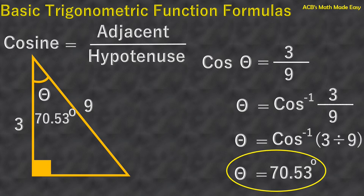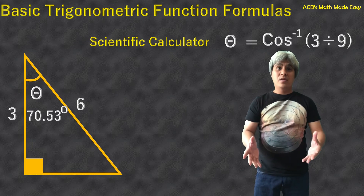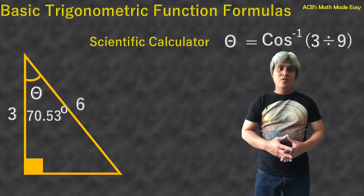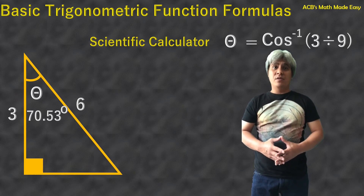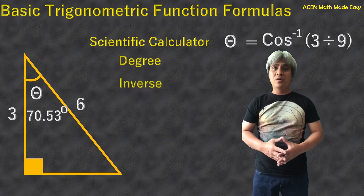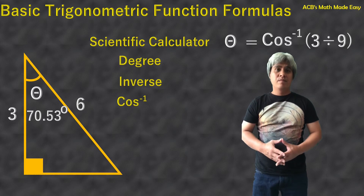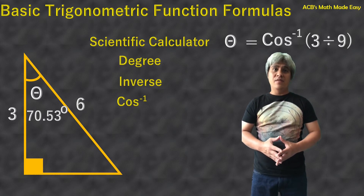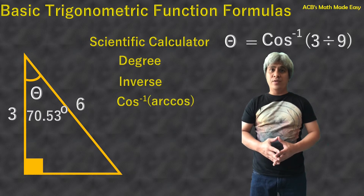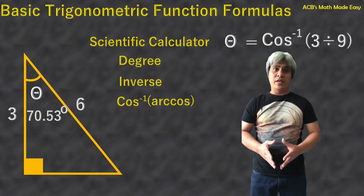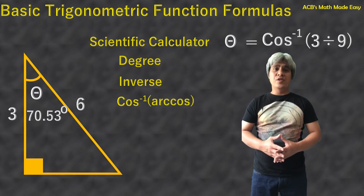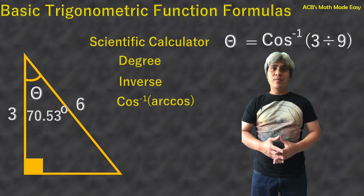This is the value of angle theta. I will now show you how to do it in the scientific calculator. This was our example. To get the angle in the scientific calculator, it must be in degree mode. Make sure it is in degree mode or you will get a wrong answer. And after that, just click the inverse button — for other calculators, press shift to show the inverse cosine — and then click the inverse cosine.